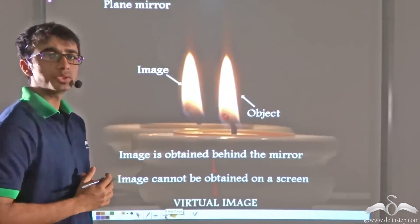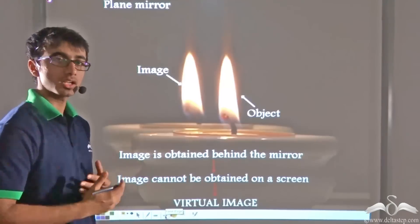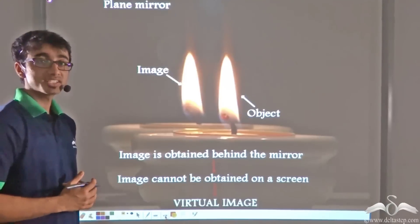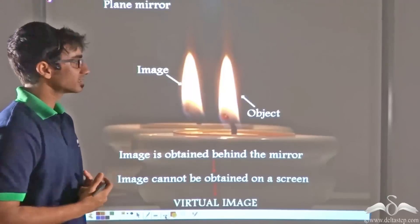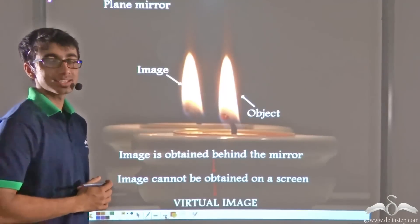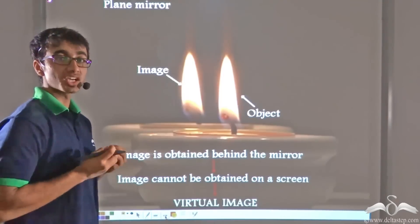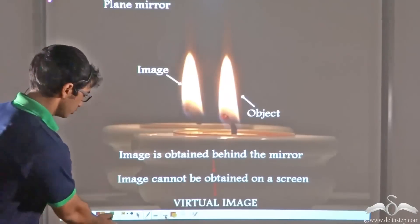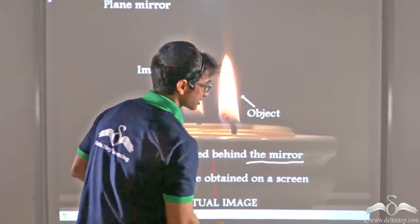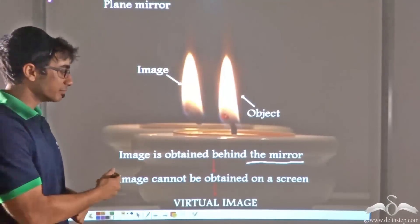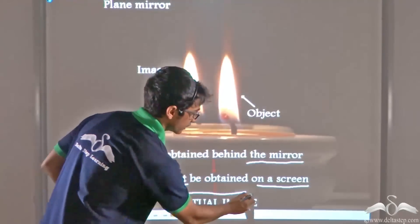Now, when you stand in front of a plane mirror, you can see your image on the mirror. Can you tell me whether that image is real or virtual? Yes, that image is virtual. Just like a convex mirror produces a virtual image, a plane mirror also produces a virtual image — that is, an image that cannot be obtained in space in the real world, or an image which cannot be obtained on a screen.